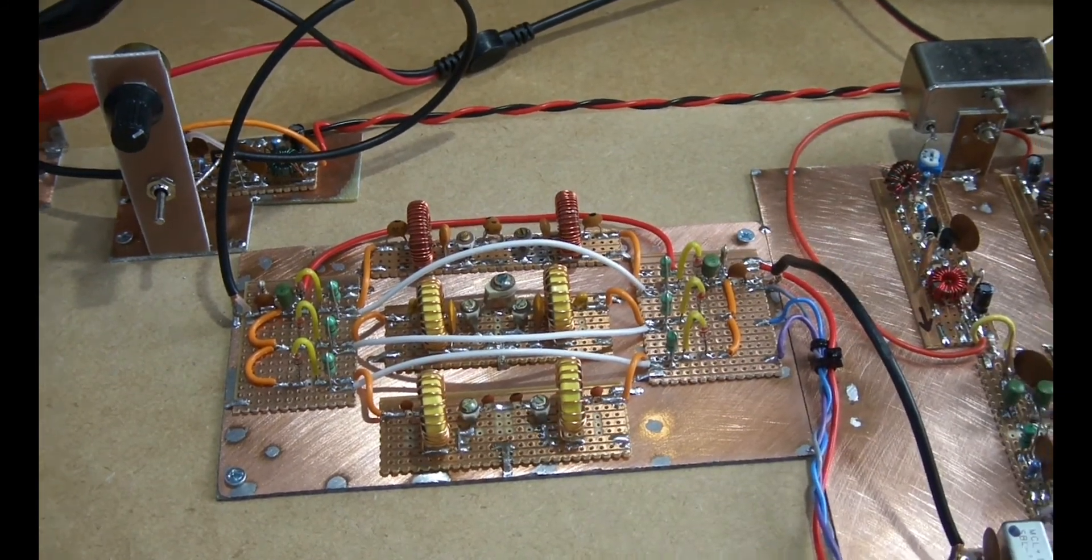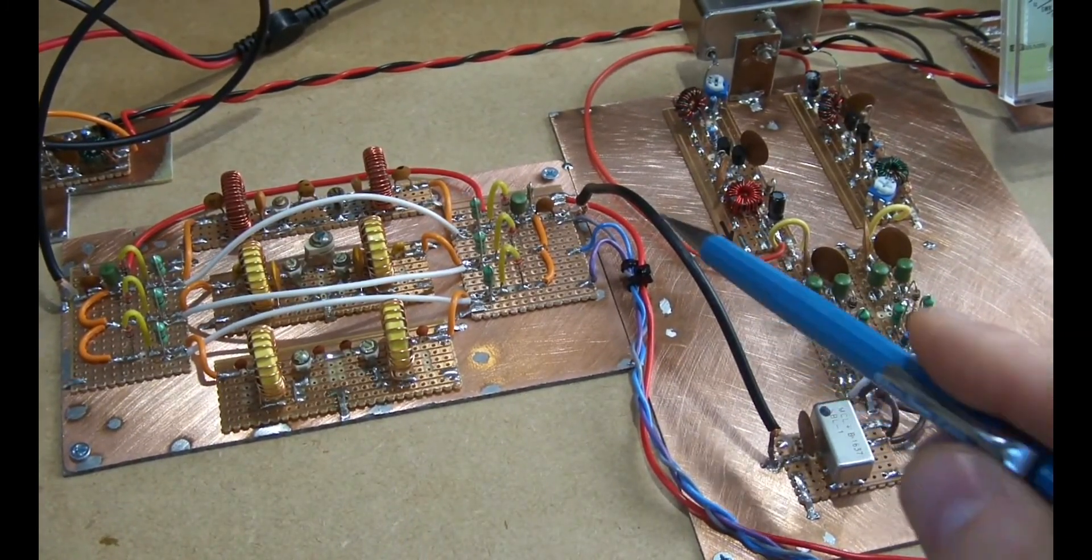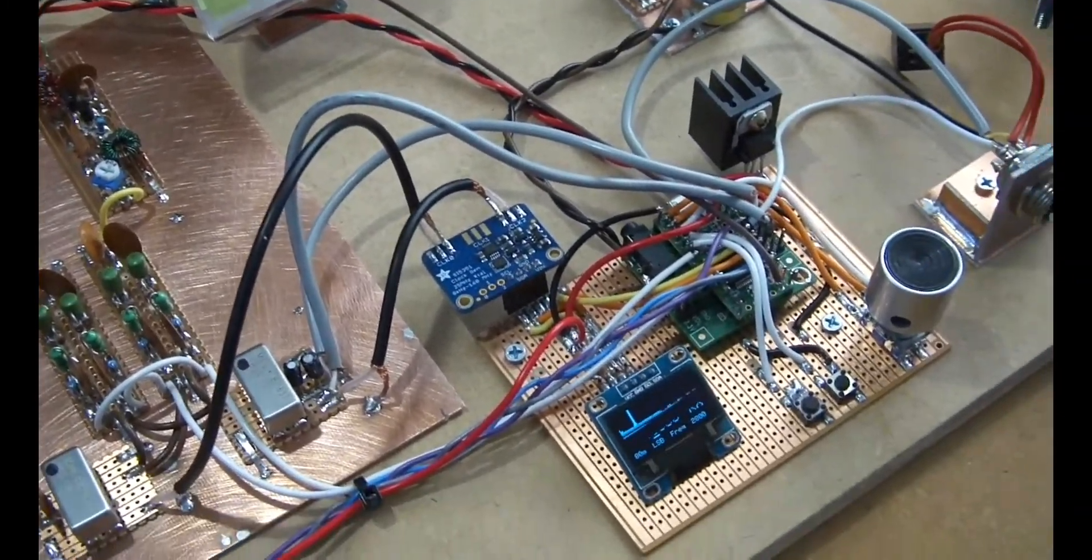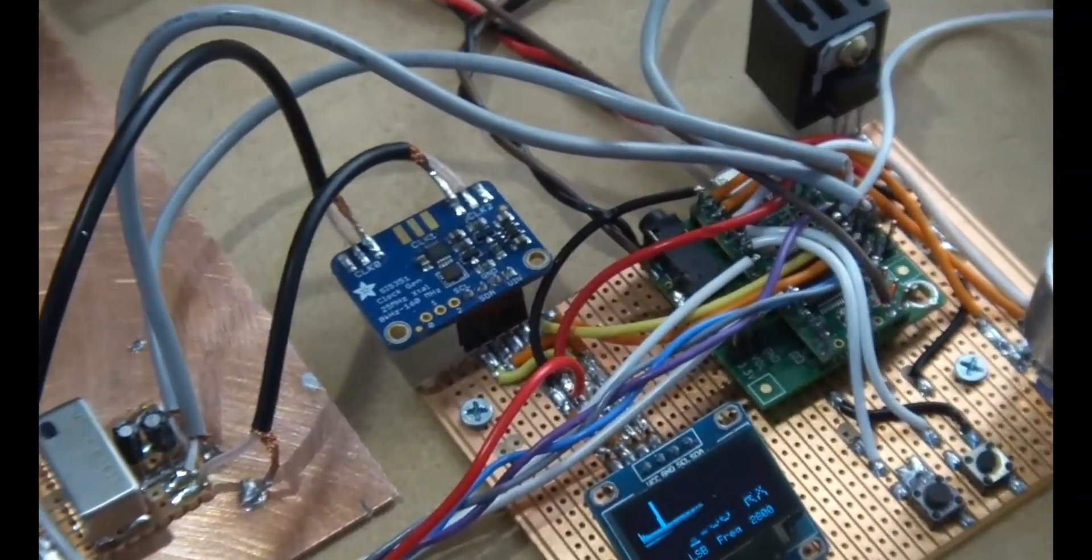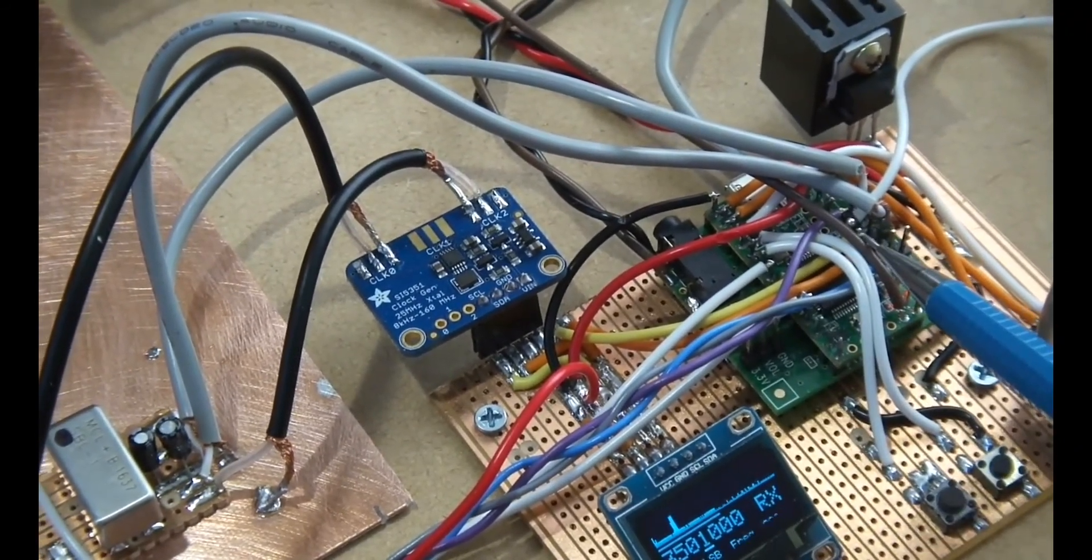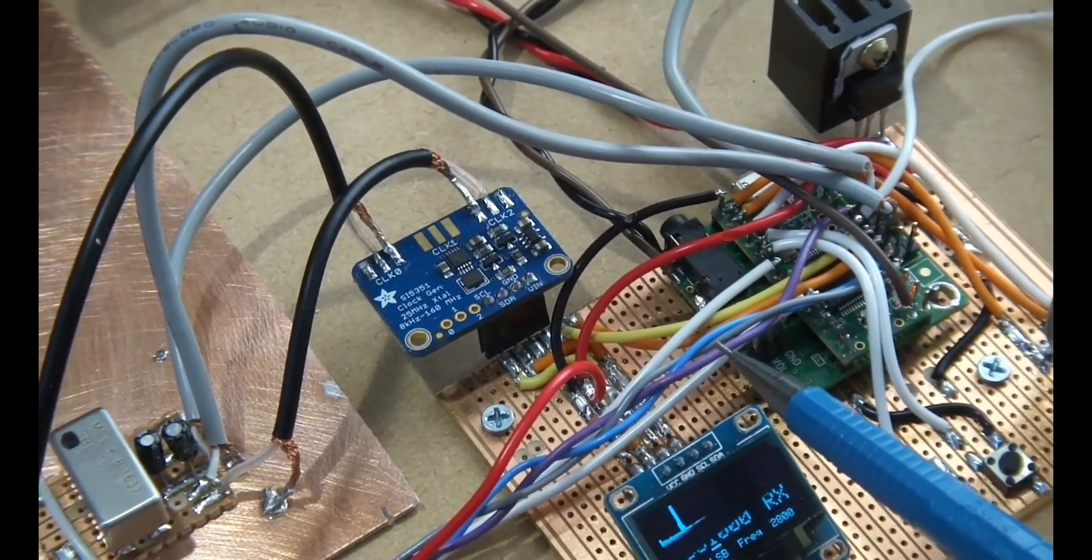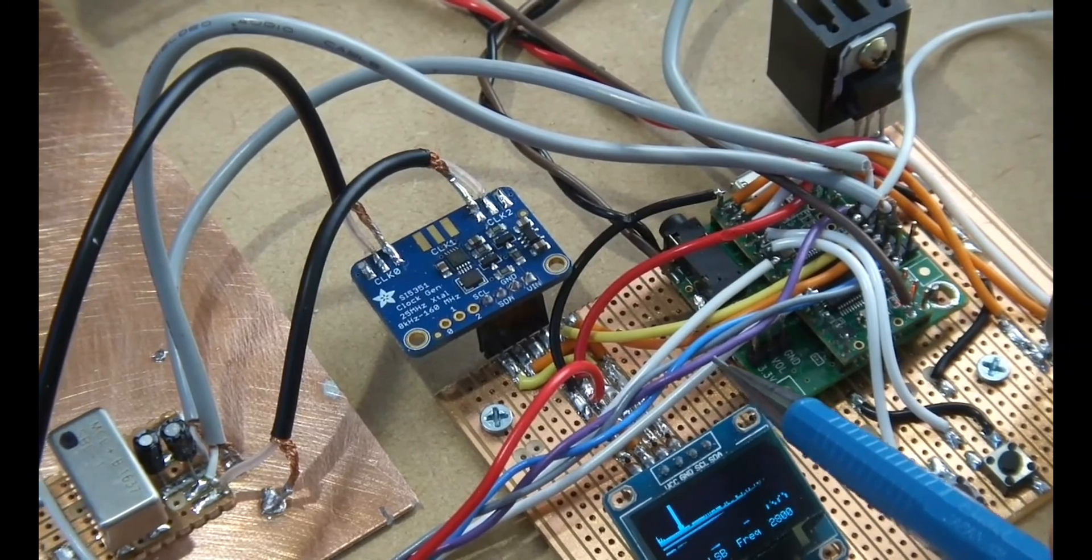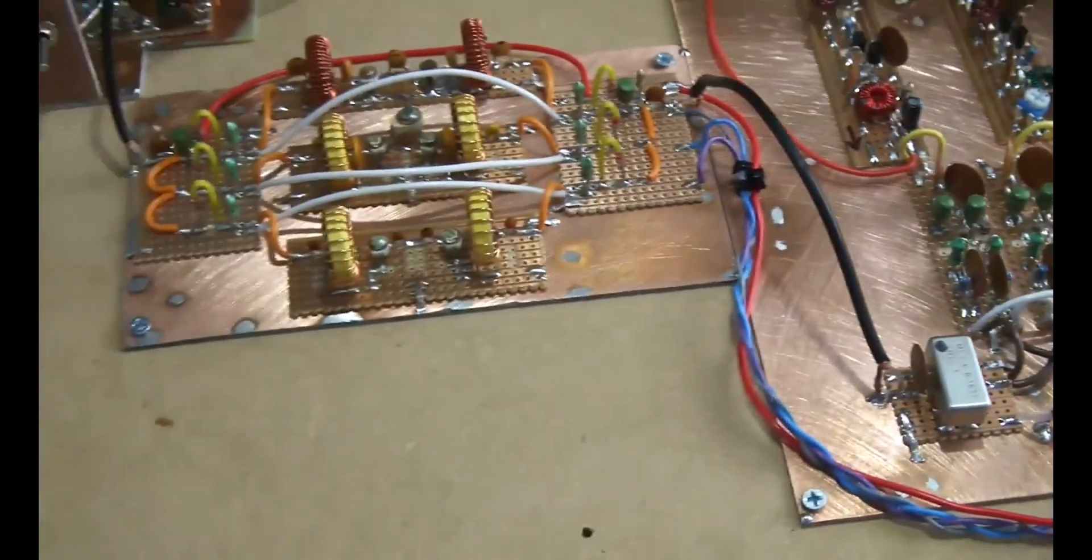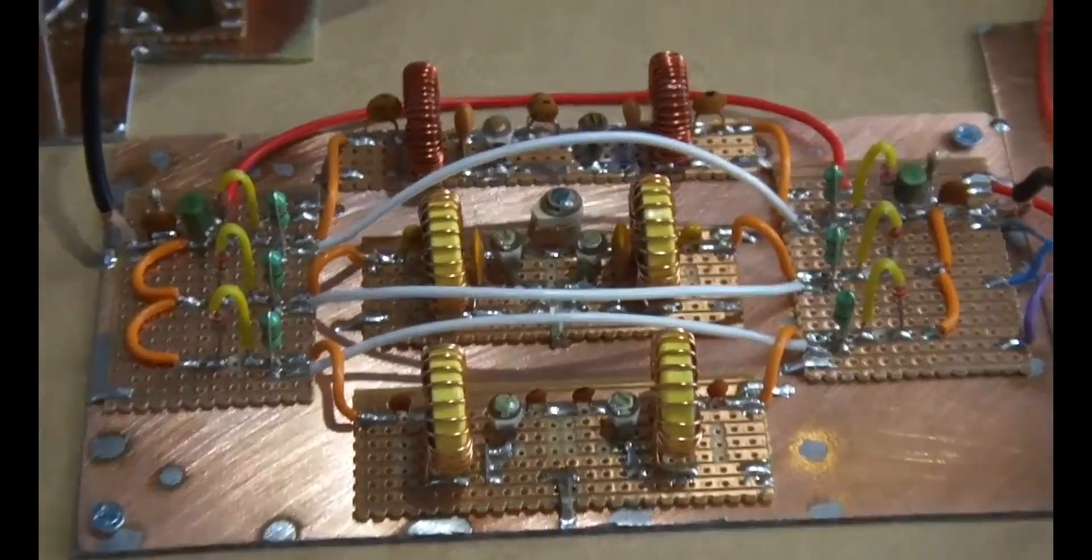The output then comes back through and goes to our first mixer. The control lines here disappear off to the teensy. I had a sufficient number of spare pins. So those are digital pins, and we'll have a look at the code later on, just showing how each one of these in turn is set low and the other two is set high.